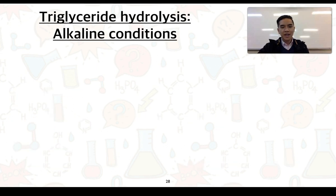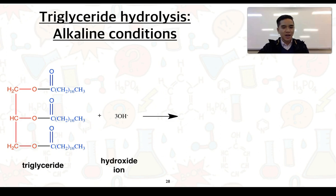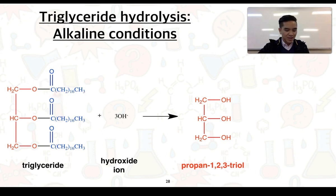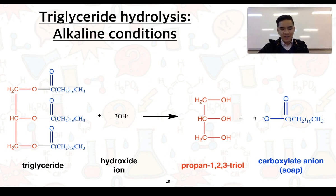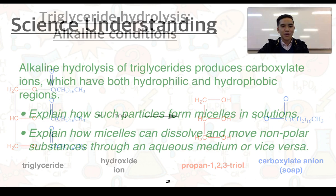In regards to alkaline conditions, this is going to be in the presence of hydroxide ions. So the hydroxide ions, again, are going to break these bonds here. It's going to form our glycerol or propane-1,2,3-triol, but instead of forming fatty acids or carboxylic acids, we know this is going to form carboxylate ions. And these carboxylate ions can be thought of as soap ions, and this is a good segue into the next component.